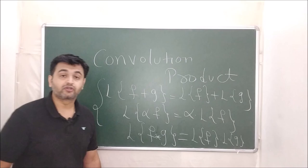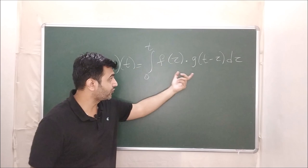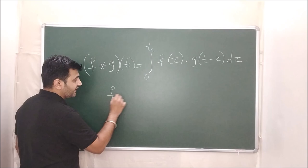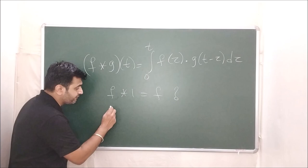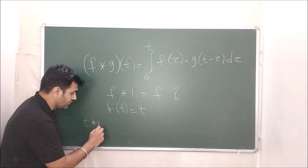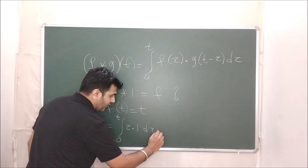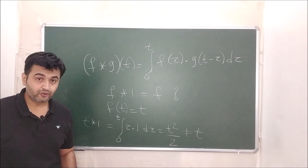The convolution product f★g is defined as the integral from 0 to t of f(τ)·g(t−τ) dτ. This is not the normal product. For example, f★1 is not equal to f. A simple example: if f(t) = t, then t★1 is the integral from 0 to t of τ·1 dτ, which equals t²/2. So t★1 = t²/2, not t. That's the difference — the convolution product is different from the normal product of functions.